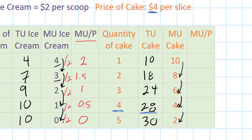Let's do the same thing for cake. I'm going to take the marginal utility of cake and divide it by the price of cake, which is four dollars, to get the marginal utility per dollar. That gives me a marginal utility per dollar of 2.5 for the first slice of cake, two for the second, and so on.